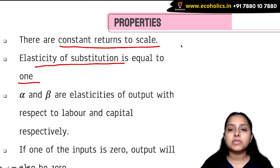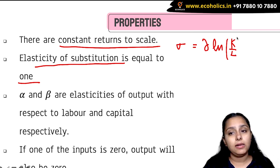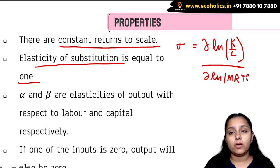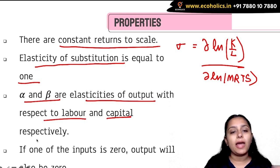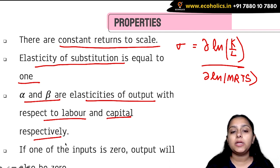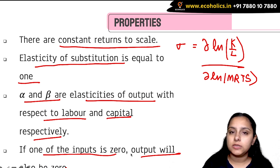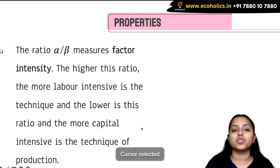The elasticity of substitution is given by the derivative of log(K/L) with respect to log(MRTS). Alpha and beta are elasticities of output with respect to labor and capital respectively — that is another property. And if one of the inputs is zero, the output will also be zero. That is another property of the Cobb-Douglas production function.